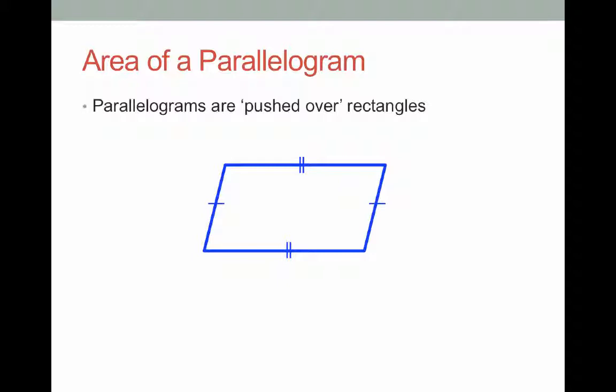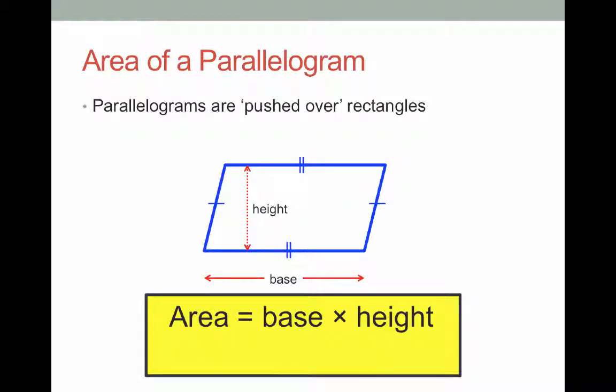Now, when finding the area of a rectangle, we need to know two variables. We need to know the length of the base, and we need to know the length of the height. The formula for the area of a parallelogram is area equals base times height, or A equals BH is a shorter way of writing that.